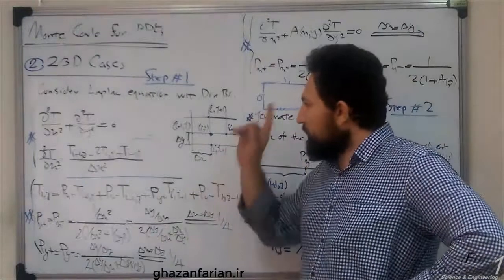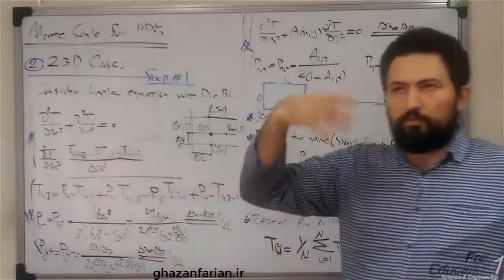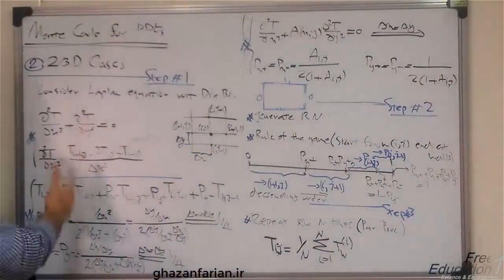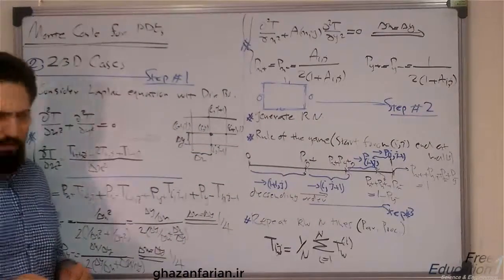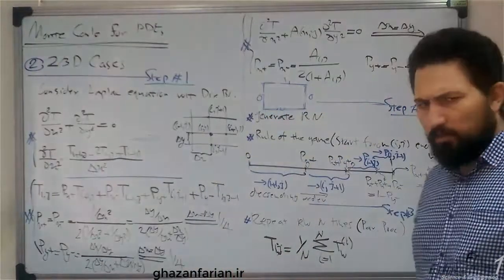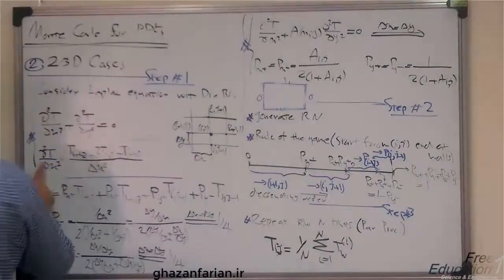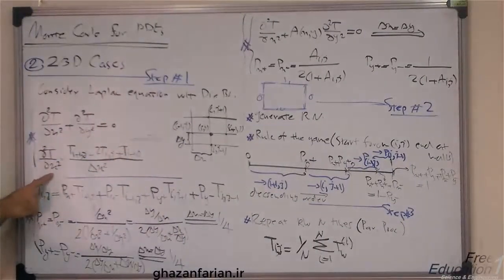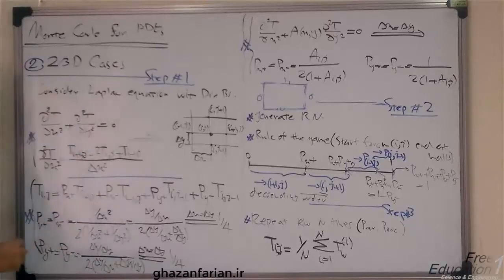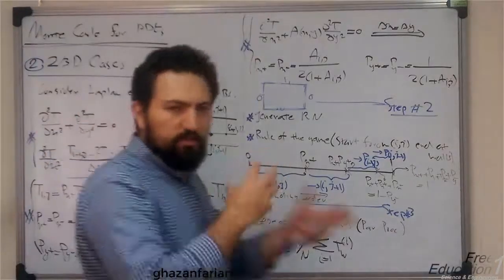This equation can be extended to three dimensions; the three-dimensional form just adds mathematical complexities, nothing more. This is the partial derivative in the x-direction. You can similarly write the partial derivative in the y-direction and then substitute these two finite differences into the main governing equation.